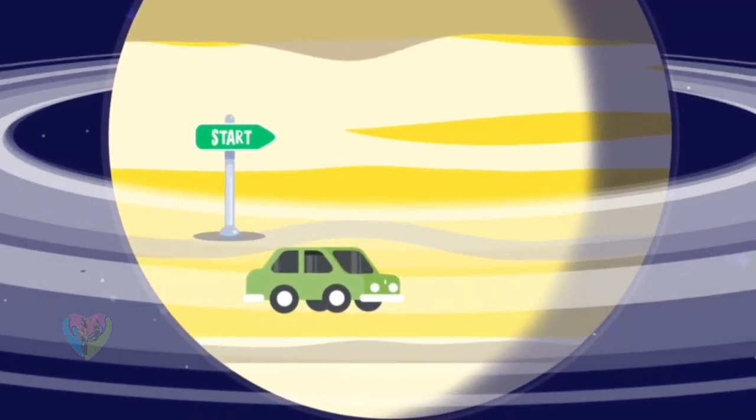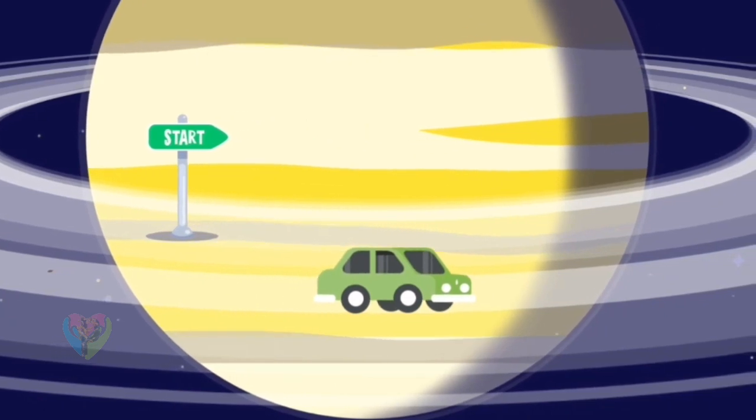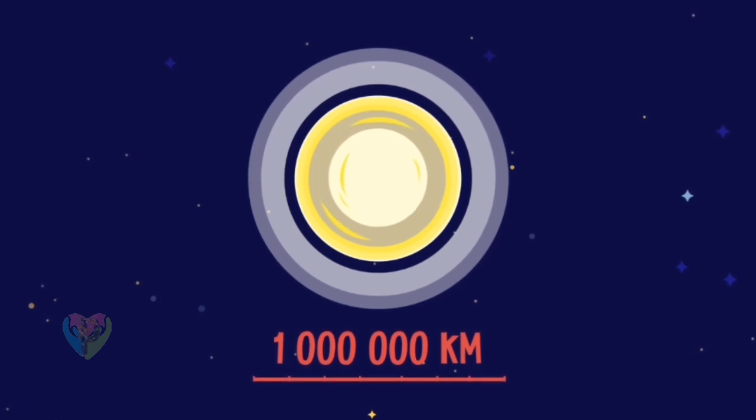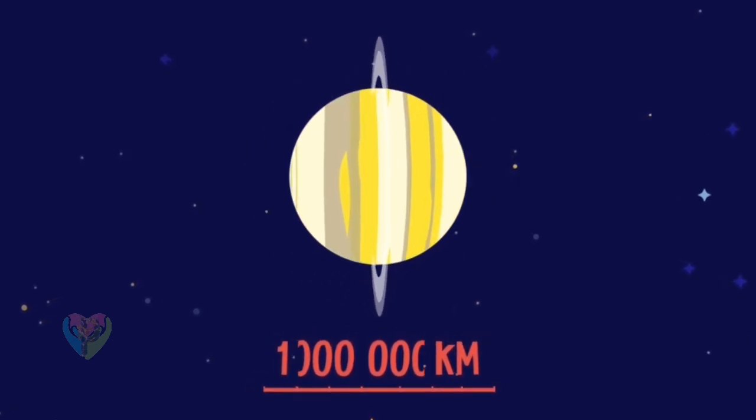To ride along one of the rings in a car, we would need a long journey over a year. At the same time, the rings are so thin that if we were on the equator of Saturn, we would not even notice them.